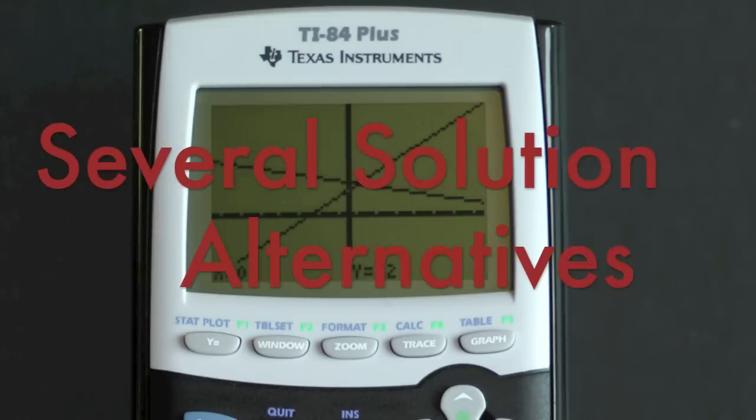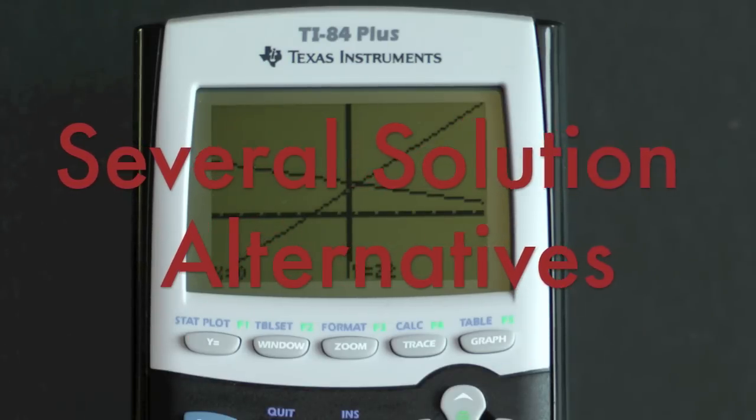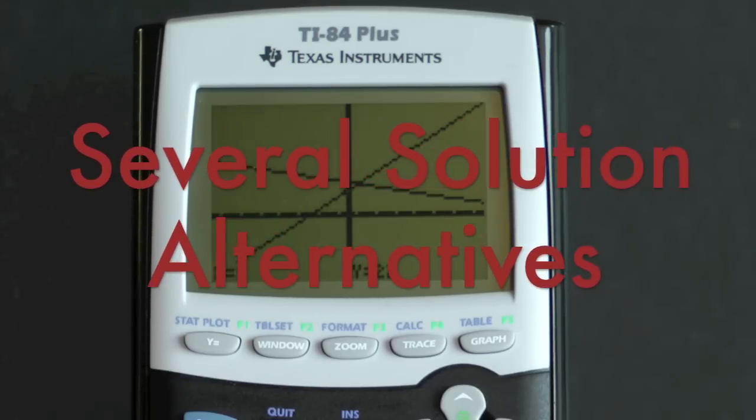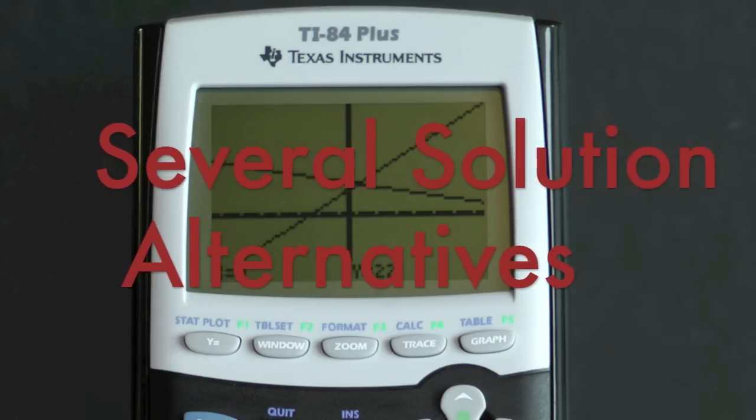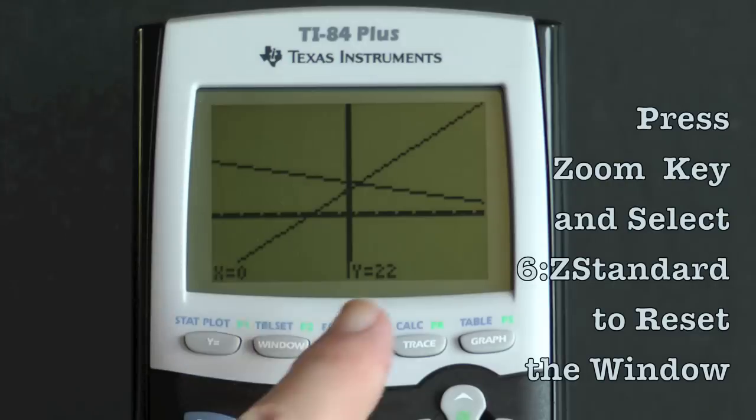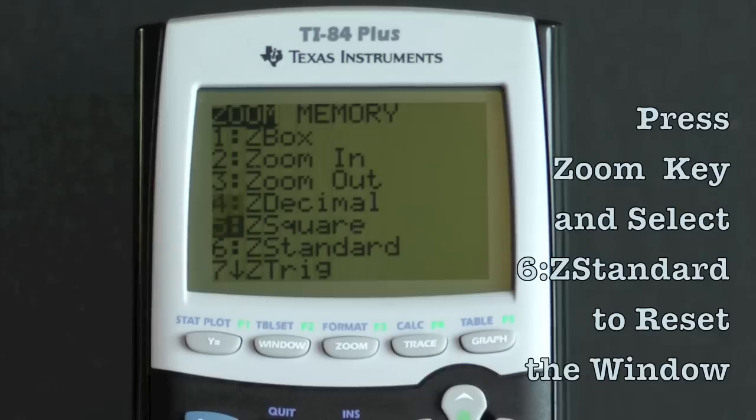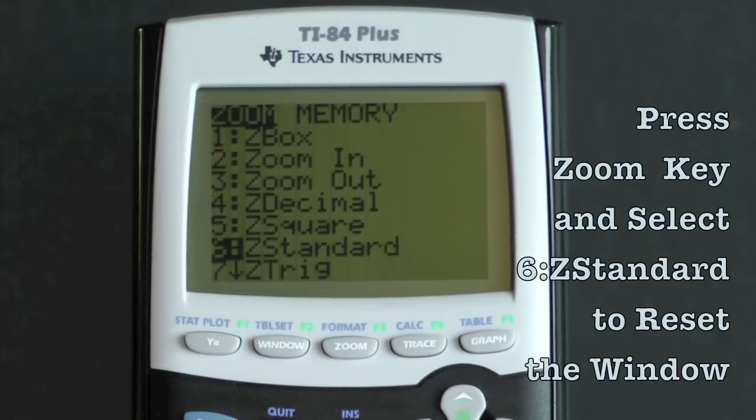There is another way to have worked this out. I want to show it to you so you can start to understand that the zoom keys are a bit of trial and error. So press the zoom and select standard so that we can reset the window and start the process over.